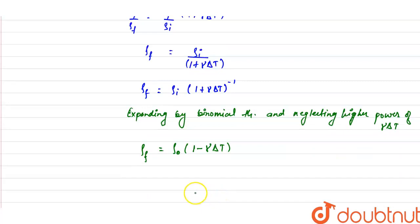So from here we can find the fractional change. The fractional change will be initial minus final upon initial that will be equals to γ times ΔT.